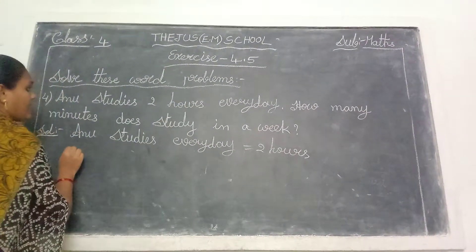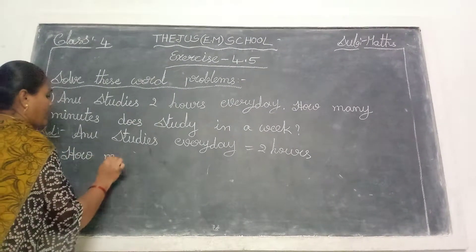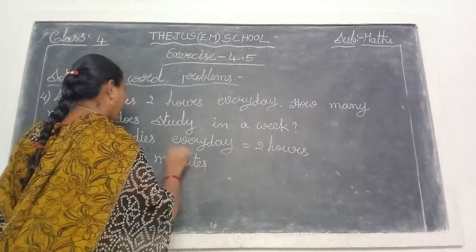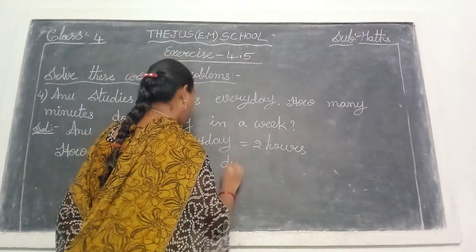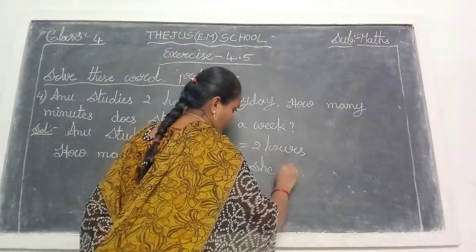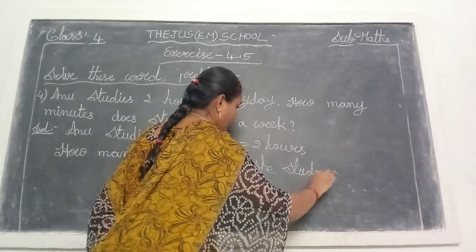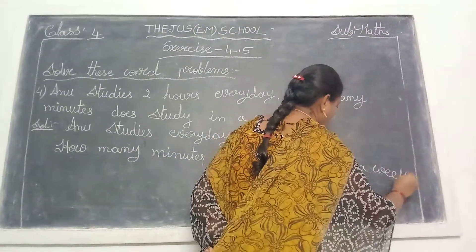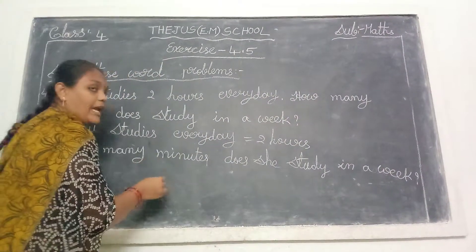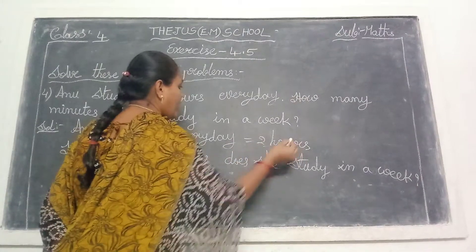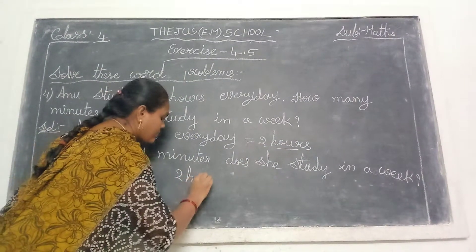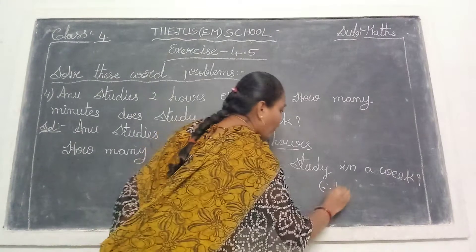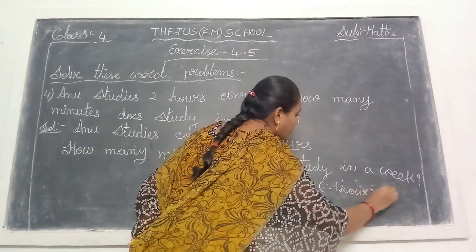And write the question: how many minutes does she study in a week? So first you convert the hours. How many hours are there? 2 hours. So 2 hours equals — first write on the right-hand side: 1 hour equals 60 minutes.